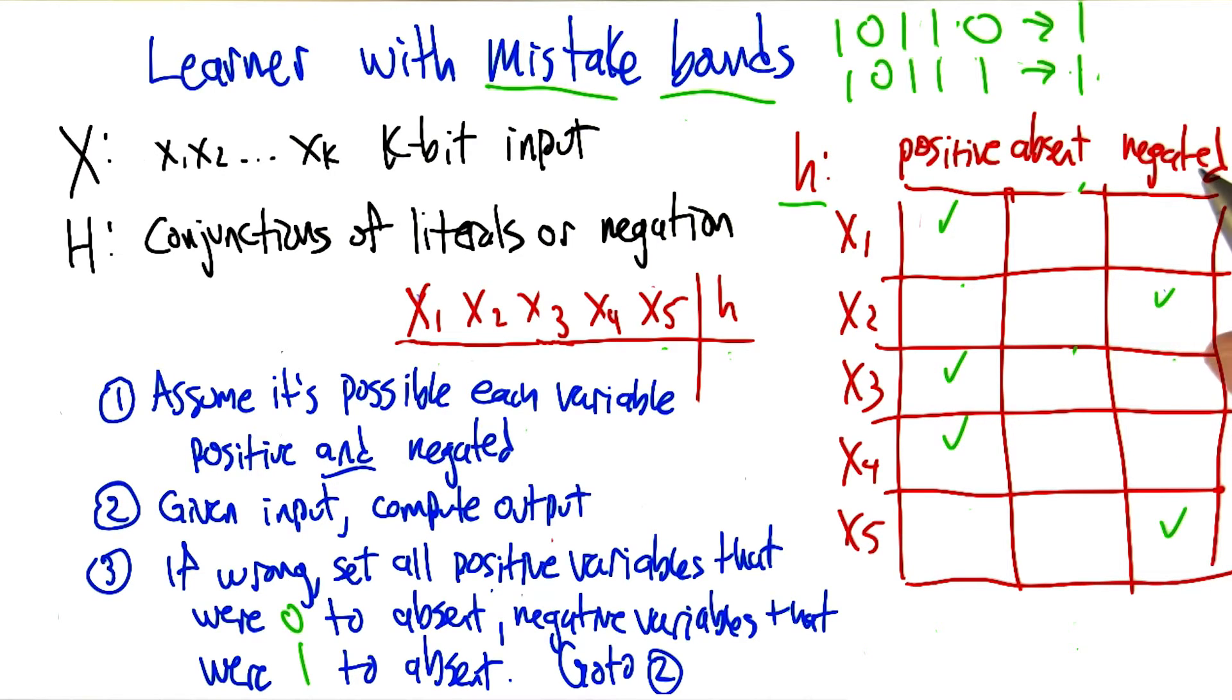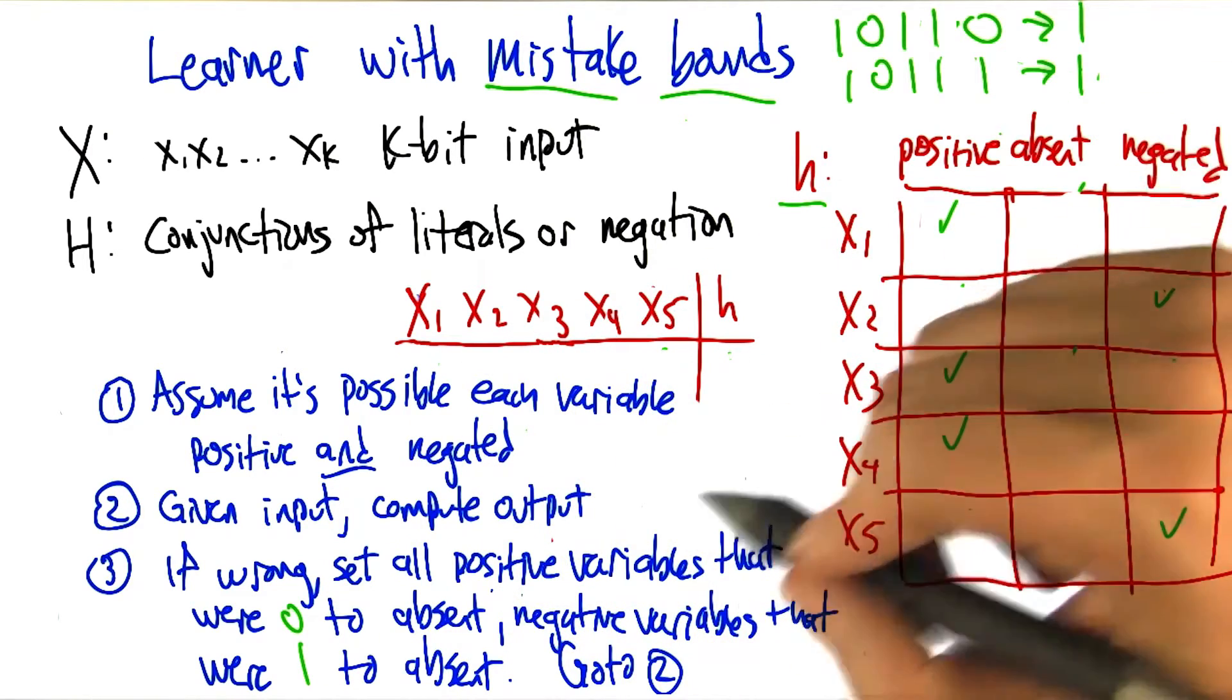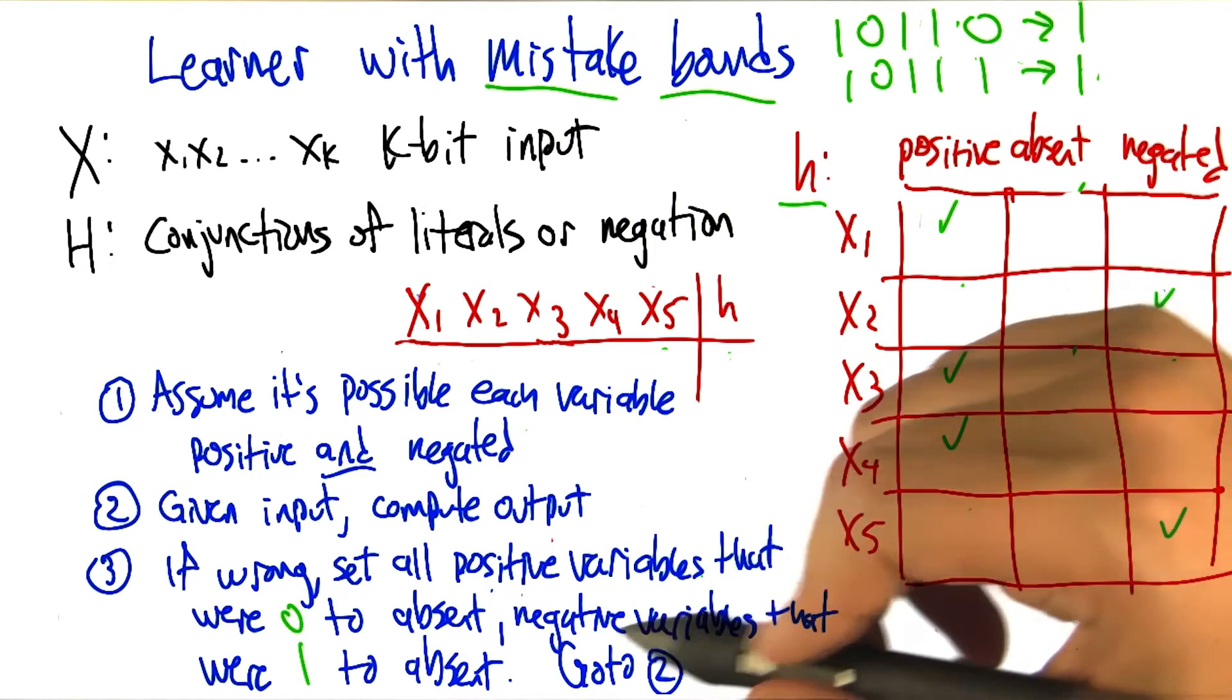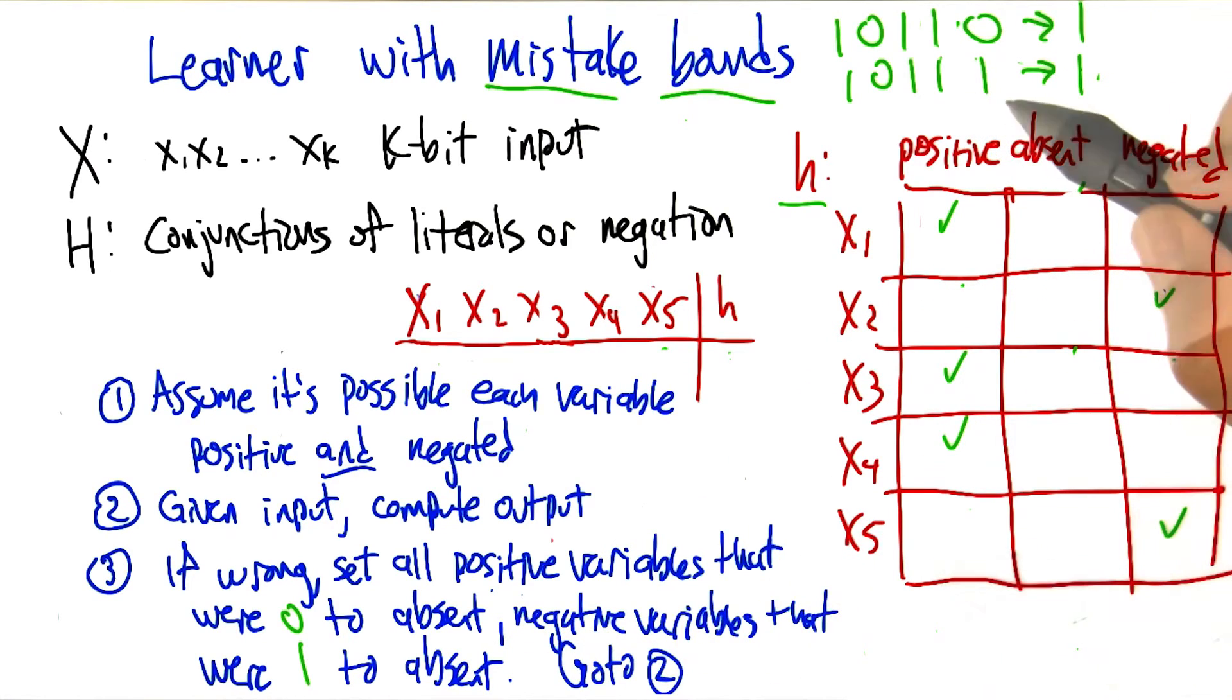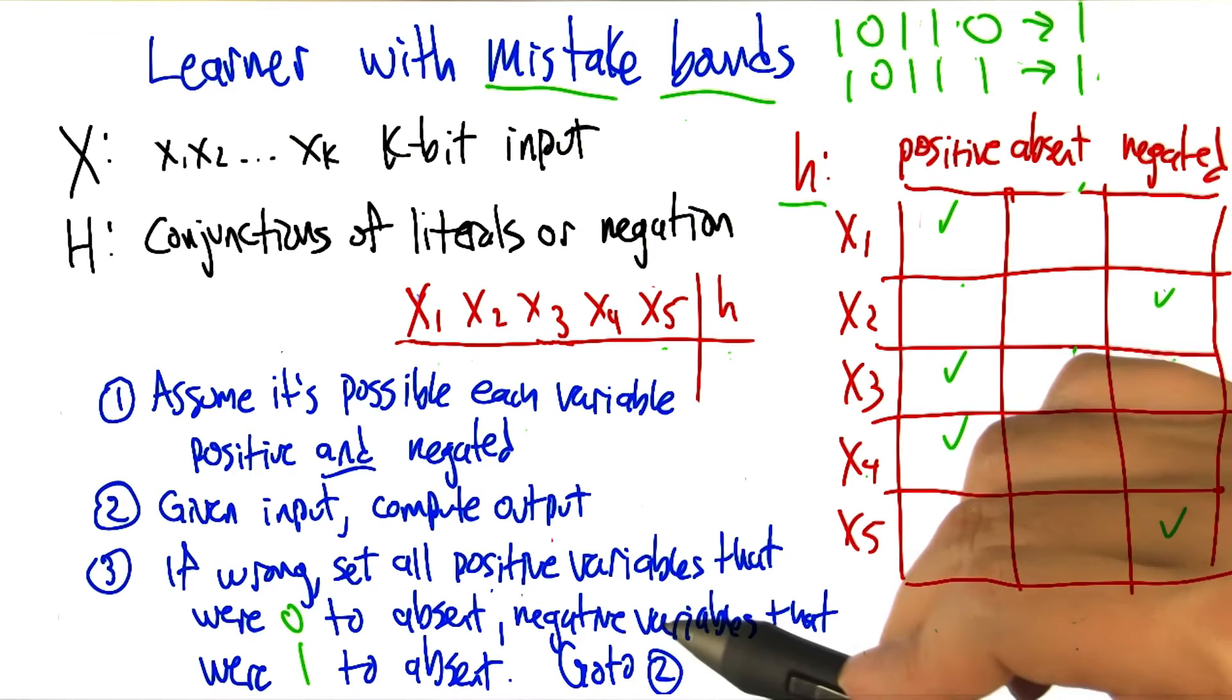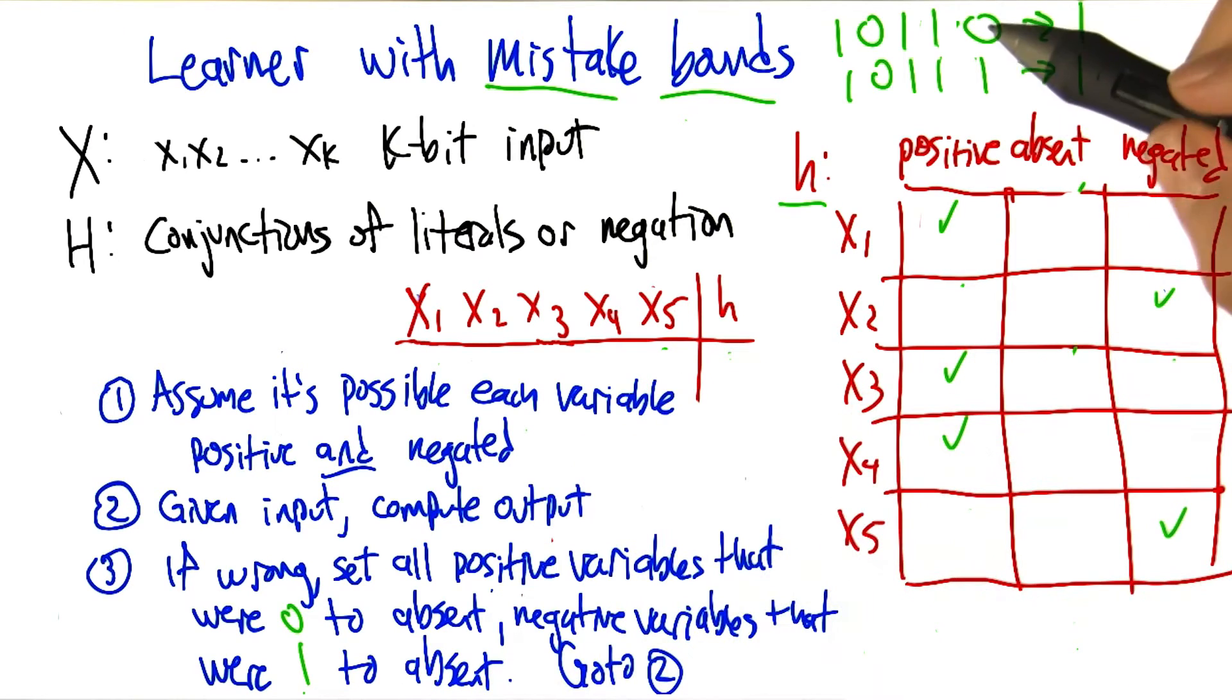All right, so now what does it know from that? Well, I'm just reading your algorithm now, and I'm just going to do what number 3 says. All right, that's a good idea. It says, if we're wrong, which we are in this case, set all the positive variables that were 0 to absent. All the positive values that were 0, there are none of those. And set all the negative variables that were 1 to absent.